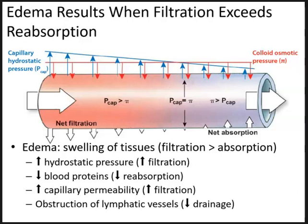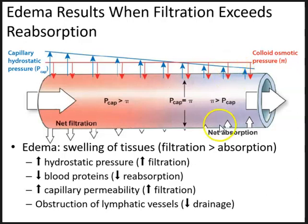A third factor that can cause edema is an increase in interstitial proteins due to excessive leakage or increased capillary permeability. Excess leakage of proteins out of the blood decreases colloid osmotic pressure — the pressure that encourages pulling fluid back into the capillary. A decrease in colloid osmotic pressure increases net capillary filtration, causing fluid to remain within the interstitium, resulting in edema and swelling of tissues.